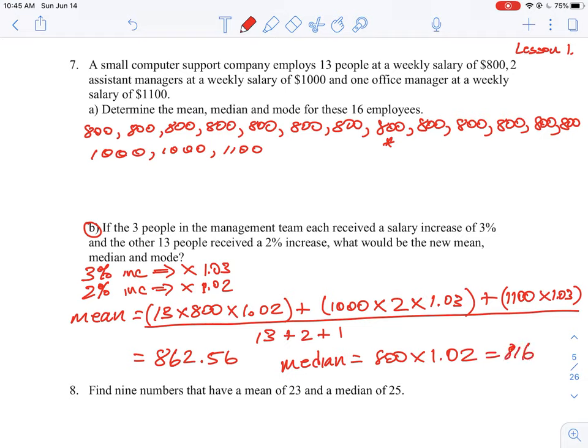Okay, so that's with the 2%. And this is also the mode because the mode is the most common value, and all we're doing is taking 800 and moving it to 816.